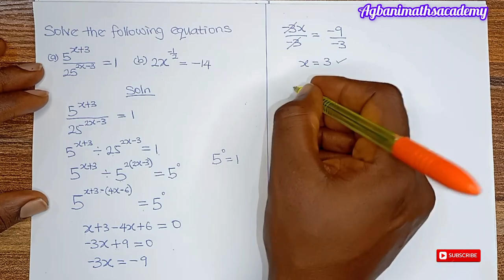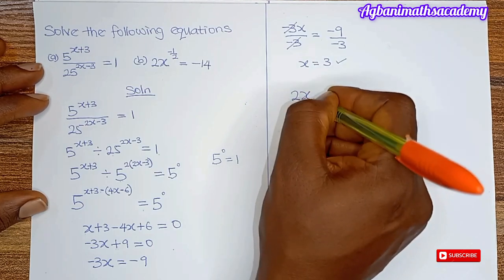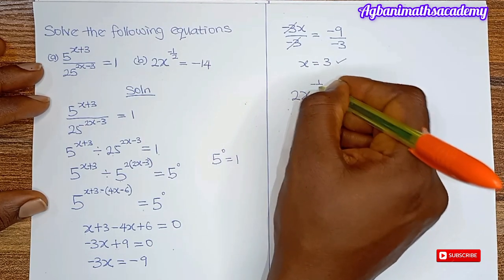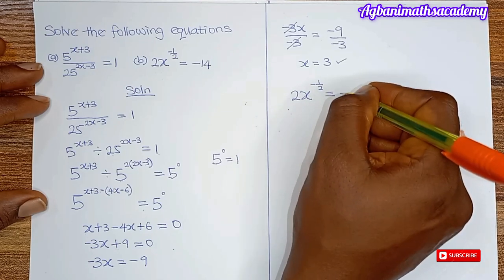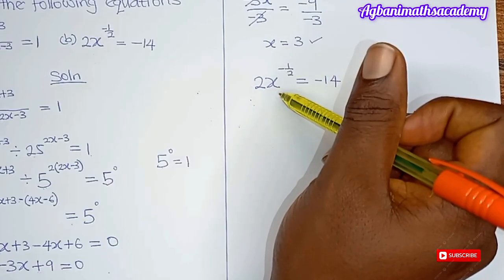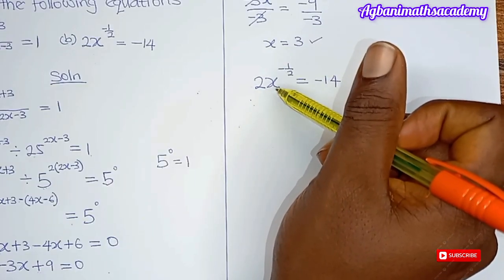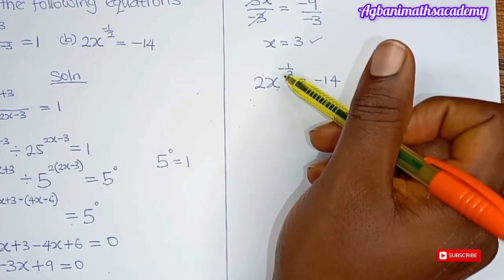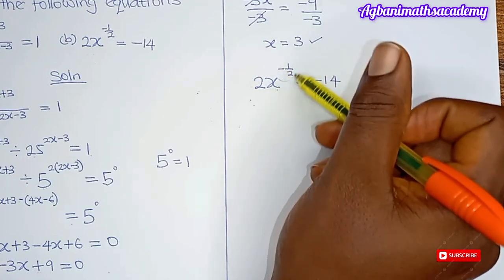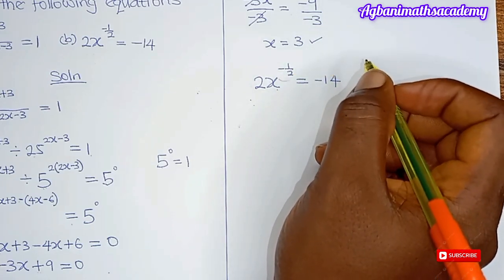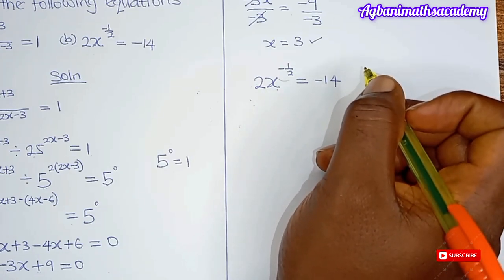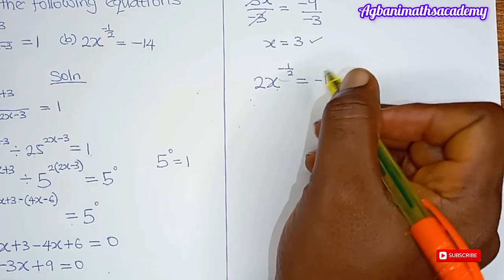Now let's look at the second equation: 2x to the power of minus 1 all over 2 is equal to minus 14. In this second example the variable is a base. Therefore, we need to make the exponent equal to 1, which we can achieve by multiplying the exponent by the inverse of the exponent.